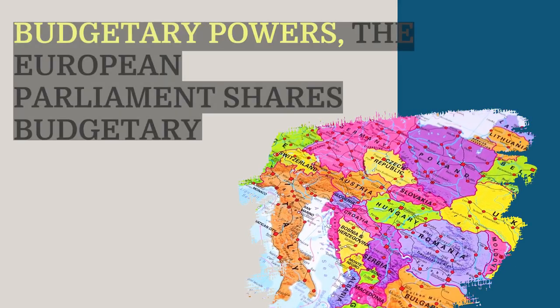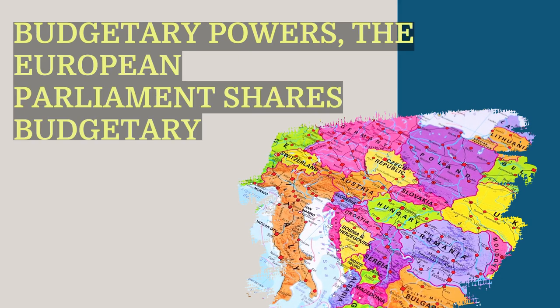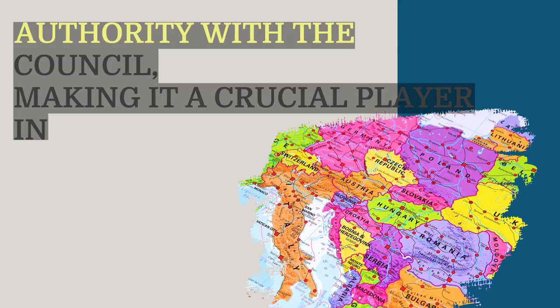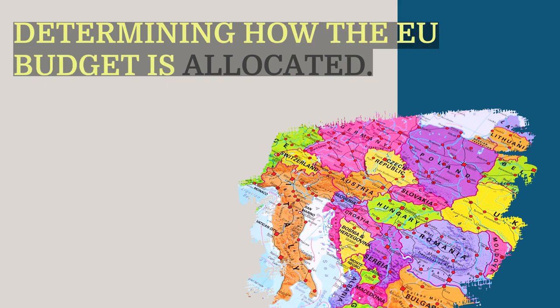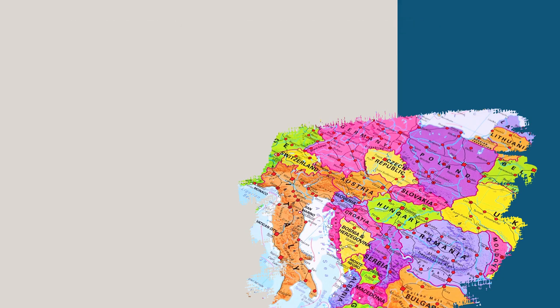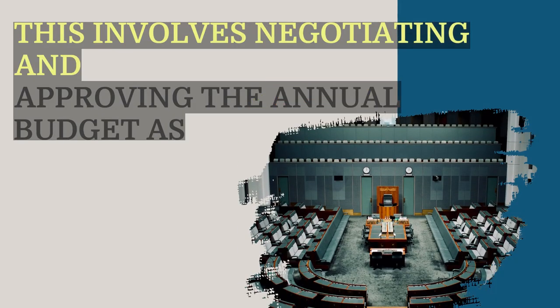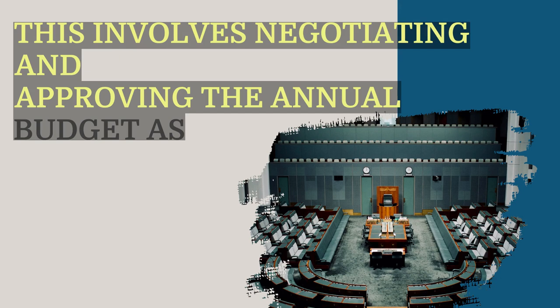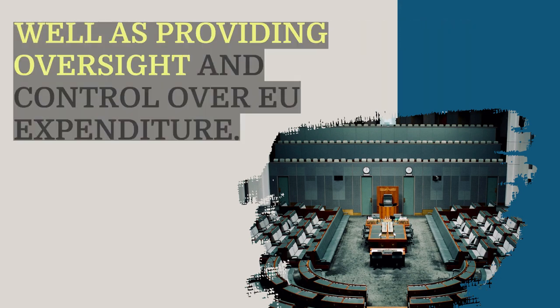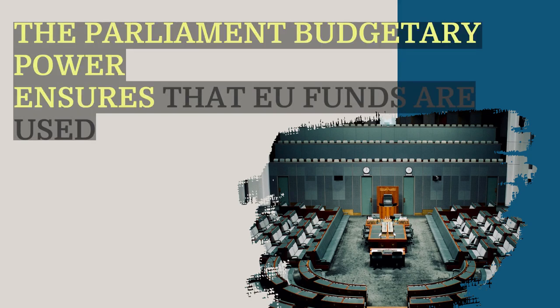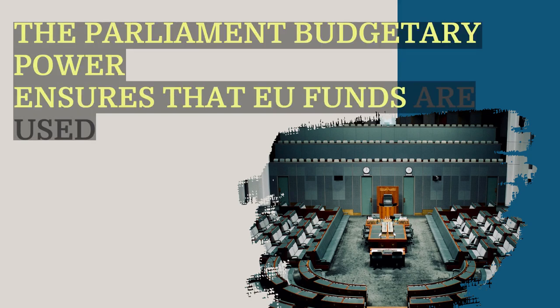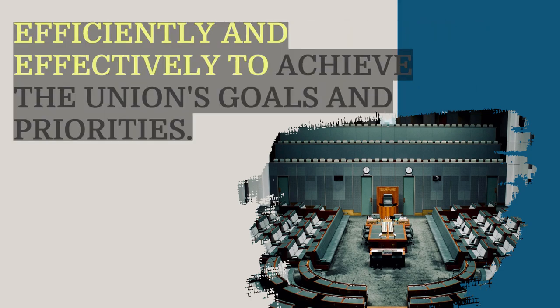Regarding budgetary powers, the European Parliament shares budgetary authority with the Council, making it a crucial player in determining how the EU's budget is allocated. This involves negotiating and approving the annual budget, as well as providing oversight and control over EU expenditure. The Parliament's budgetary power ensures that EU funds are used efficiently and effectively to achieve the Union's goals and priorities.